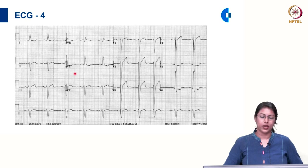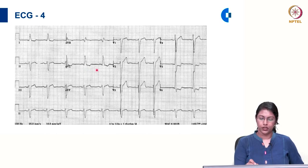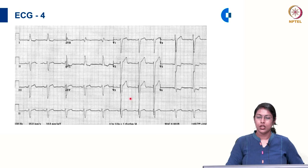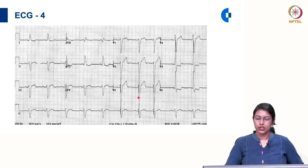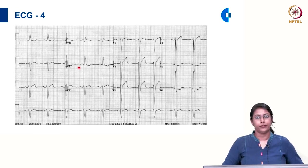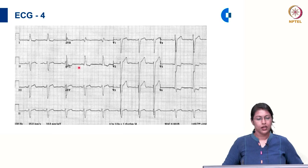Applying the Cornell voltage criteria: R in AVL is 15 millimetre and S in V3 is approximately 25 millimetre, giving a sum well more than 28 millimetre — suggestive of LVH by Cornell criteria as well. Applying Romhilt and Estes criteria: increased QRS voltage well beyond 30 millimetre gives 3 points, and ST-T abnormalities give another 3 points — the score is well beyond 5. This ECG satisfies multiple criteria for left ventricular hypertrophy.